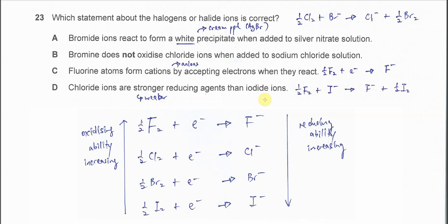Question 23. Which statement about halogen or halide ion is correct? A. Bromide ions react to form a white precipitate when added to silver nitrate solution. So this one is wrong because we know that when it forms silver bromide, this is a cream precipitate.